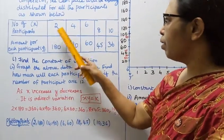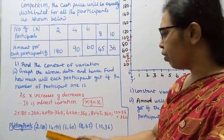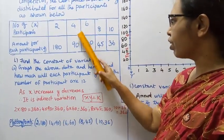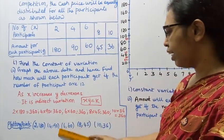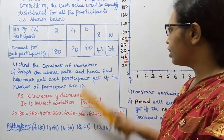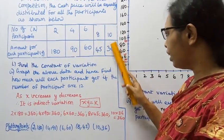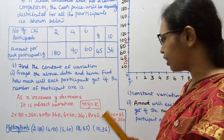Now plotting the points. The plotting points are: 2 comma 180, 4 comma 90, 6 comma 60, 8 comma 45, 10 comma 36.